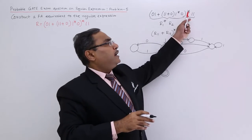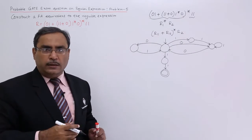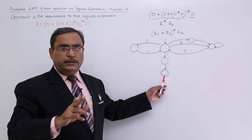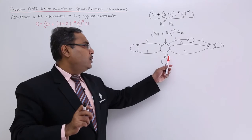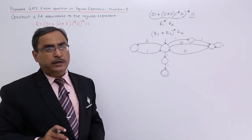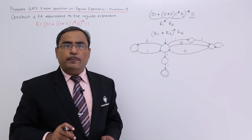Because the full thing is under whole star that means it can be null. But to reach from the initial state to the final state I must be having at least the minimum string is 1 1. I have written 1 1 to reach from the initial state to the final state. In this way the problem has been solved.